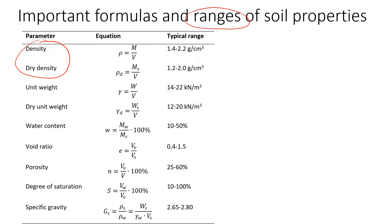So we have density and dry density. You probably already know that density is mass divided by volume. For dry density, we're going to use dry mass. That's why when we look at the range, the density of soil is always greater than the density of dry soil or dry density.